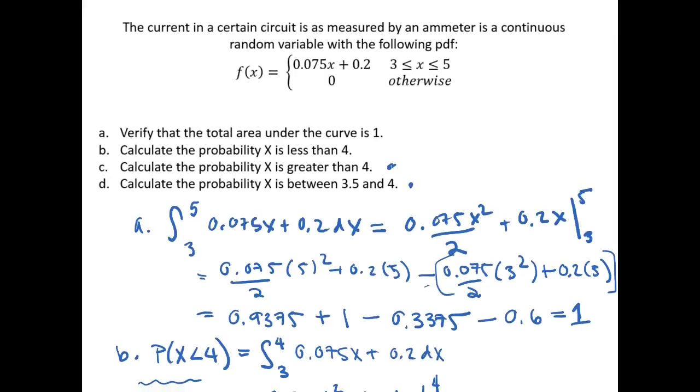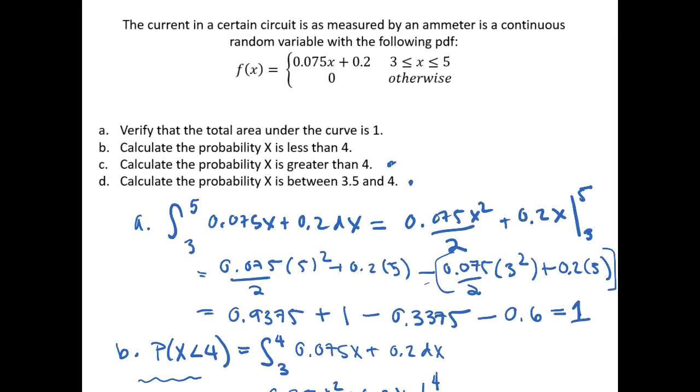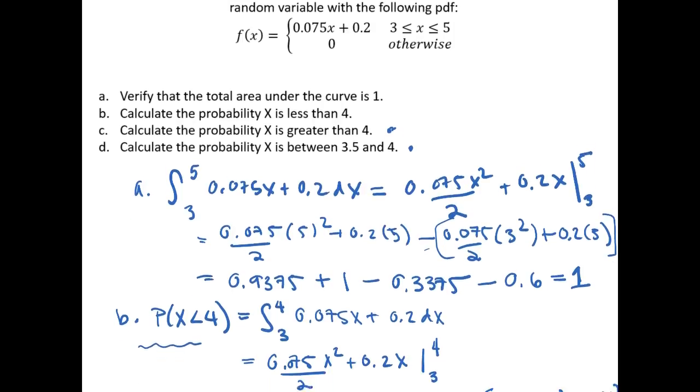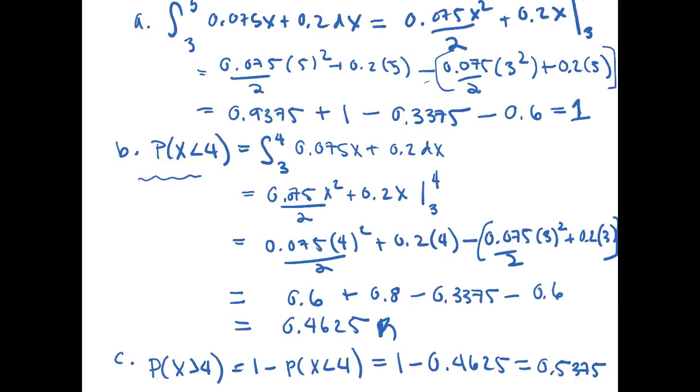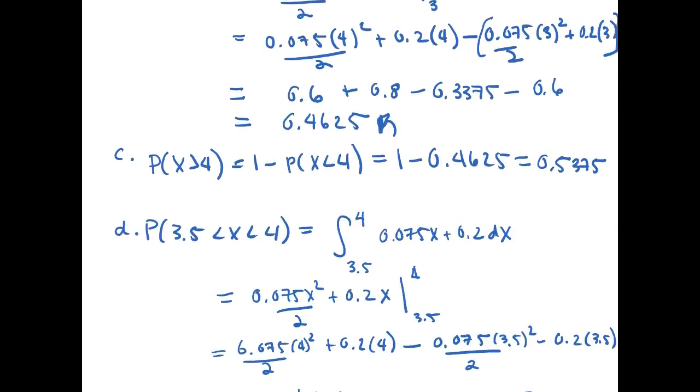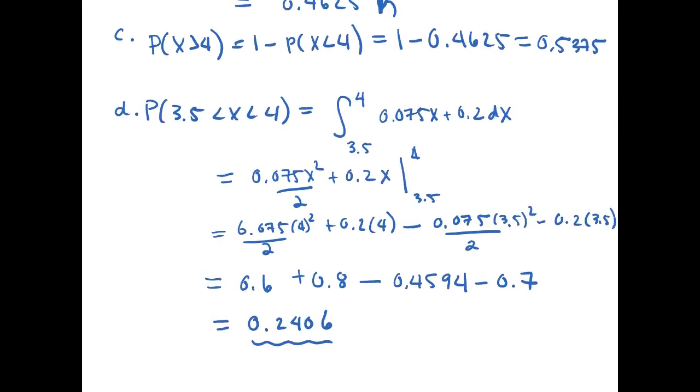And it's always important if you're trying to kind of go back to the context of the problem, remember what x is. x is the current in a particular circuit. And so that means that the likelihood that the current is between 3.5 and 4 is equal to, scroll back down, 0.2406.